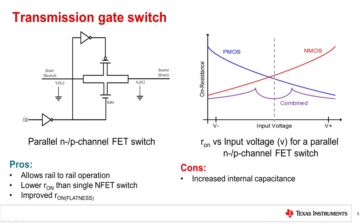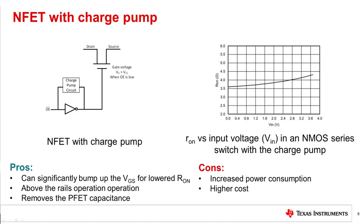This slide shows the typical construction of an NMOS switch with charge pump. Although in a transmission gate the source-to-drain resistance is lower than in an N-channel FET switch, the PMOS adds capacitance, which is undesirable for some applications. To solve this, another switch structure uses a charge pump circuit. In the NMOS with charge pump, the charge pump generates a gate voltage 2 to 3 volts higher than VCC. As a result, when the input reaches VCC, the switch remains on and the output voltage equals the input voltage over the full 0 to VCC input range.